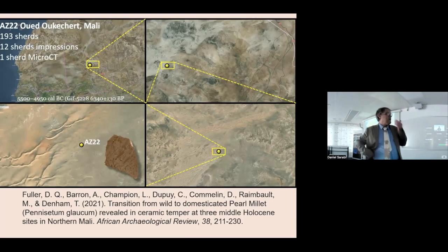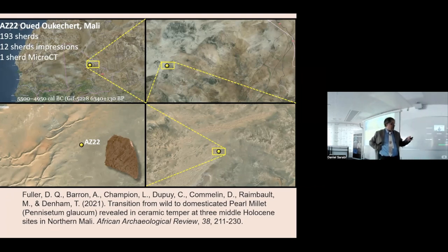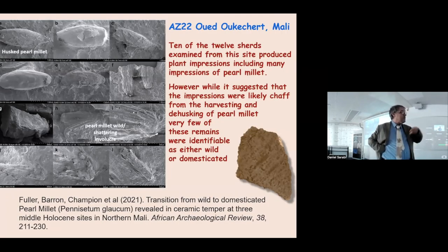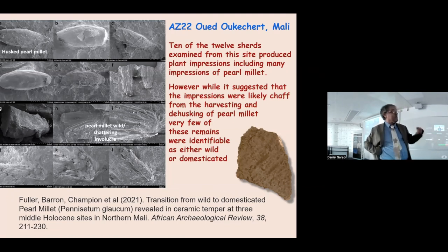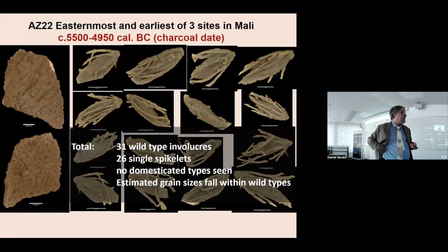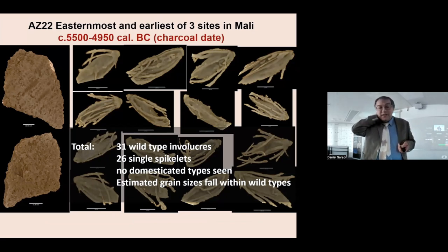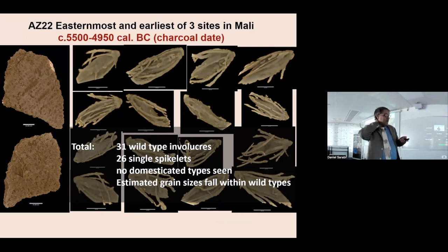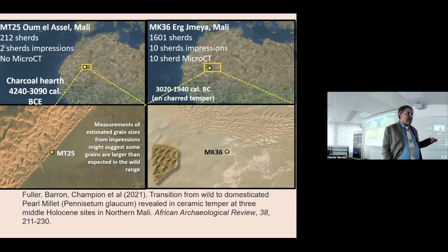We had this new material from the French collections — sites AZ-22 and MK-36, covering a range of different periods. We'd already been working on AZ-22 with surface impressions by SEM — most of them looked like wild pearl millet, or you couldn't really tell because they were broken off. So we needed to look inside. From a single sherd from AZ-22, it was just chock-a-block full of pearl millet casts inside — all single spikelet, narrow, and all with a smooth base, so entirely of the wild type.